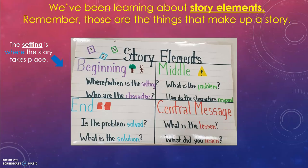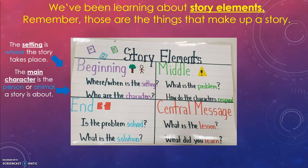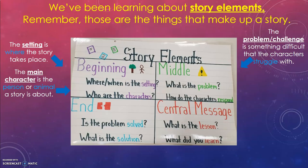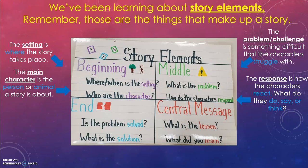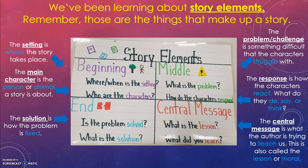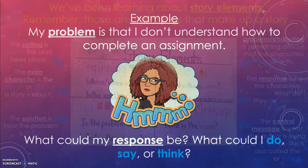We've been learning about story elements — those are the things that make up a story. The setting is where the story takes place; it could be a mall or it could be the moon. The characters are the person or animal that a story is about, like the bear and the little bee. The problem or challenge is something difficult that the characters struggle with — something that is hard for them to deal with. The response is how the characters react: what do they do, say, or think? The solution is how the problem is fixed. The central message is what the author is trying to teach us — this is also called the lesson or moral.